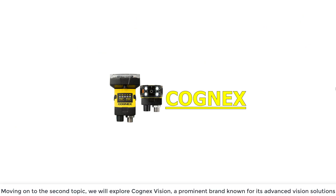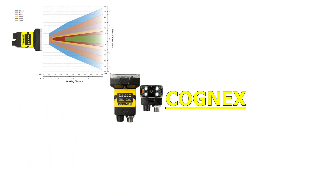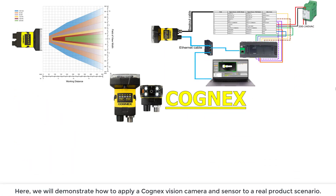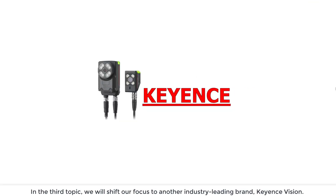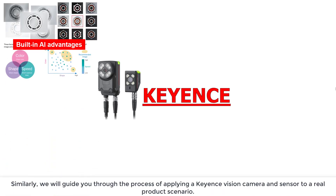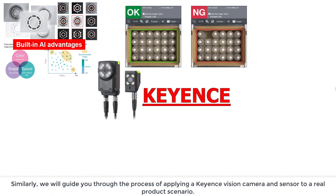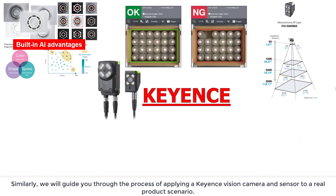Moving on to the second topic, we will explore Cognex Vision — a prominent brand known for its advanced vision solutions. Here we will demonstrate how to apply a Cognex vision camera and sensor to a real product scenario. In the third topic, we will shift our focus to another industry-leading brand: Keigan Vision.